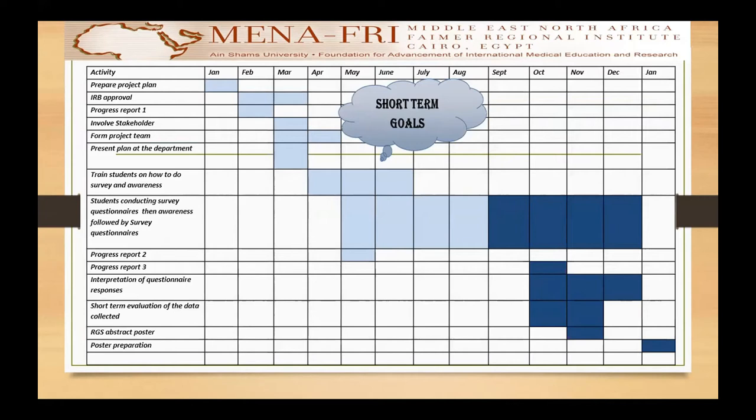We then discussed how to write the survey questions and formed the survey together, which the students distributed to their community members. My main plan was to conduct 50 surveys — I reached 57, and I'm going to continue the survey.